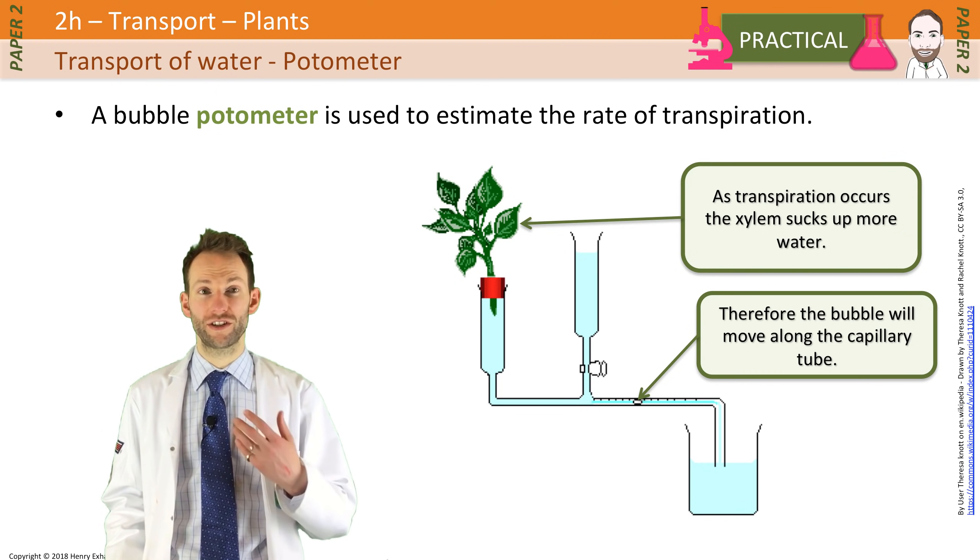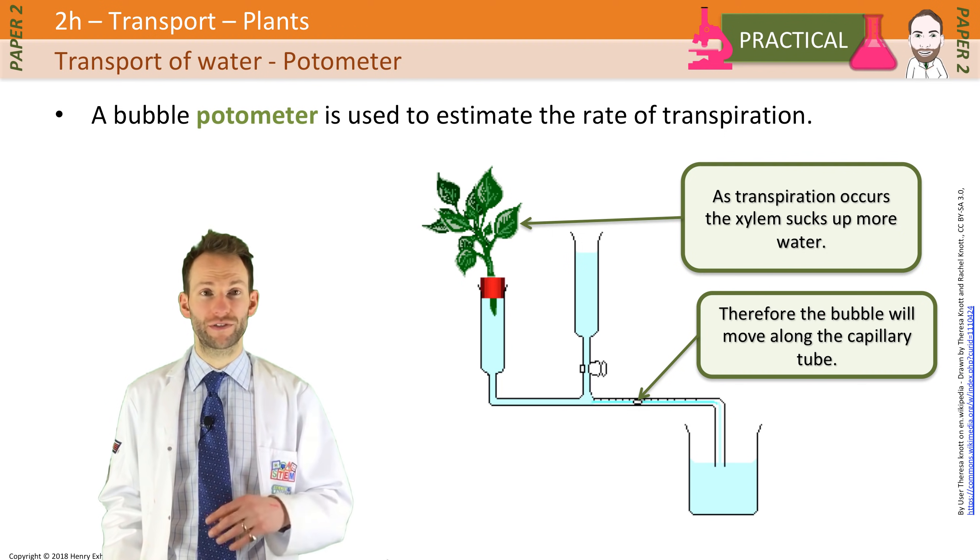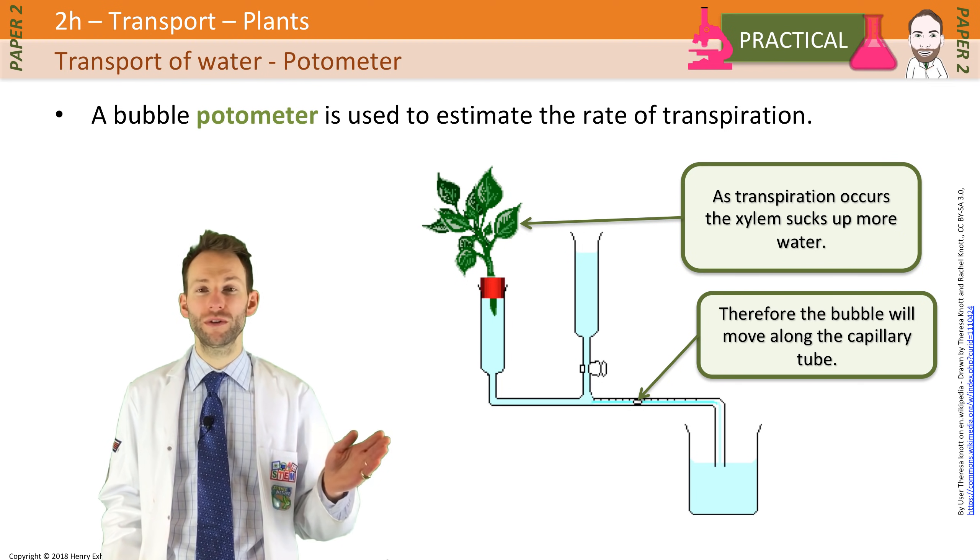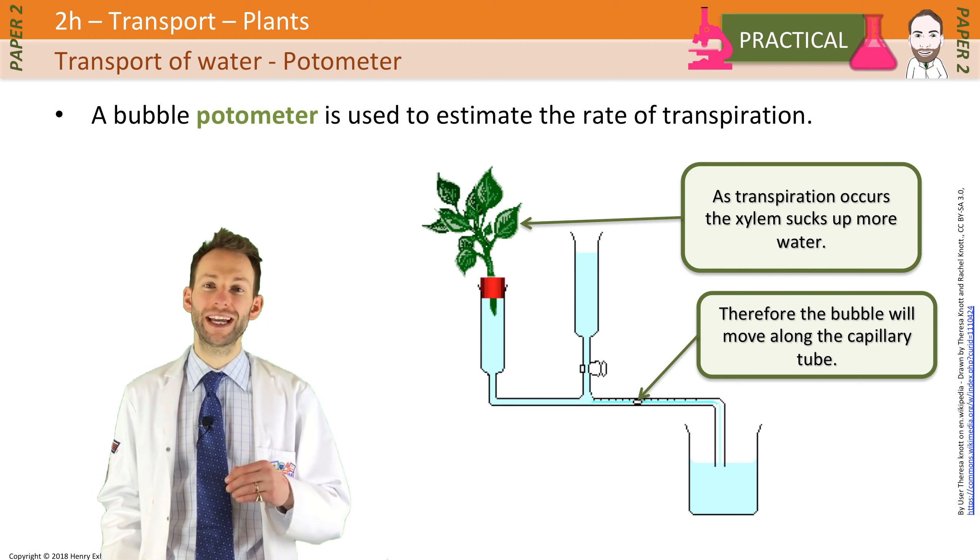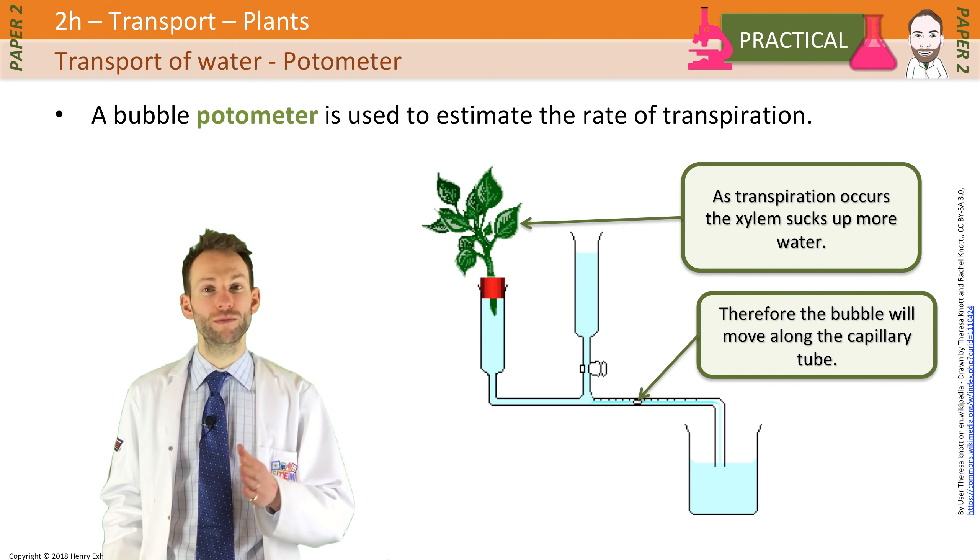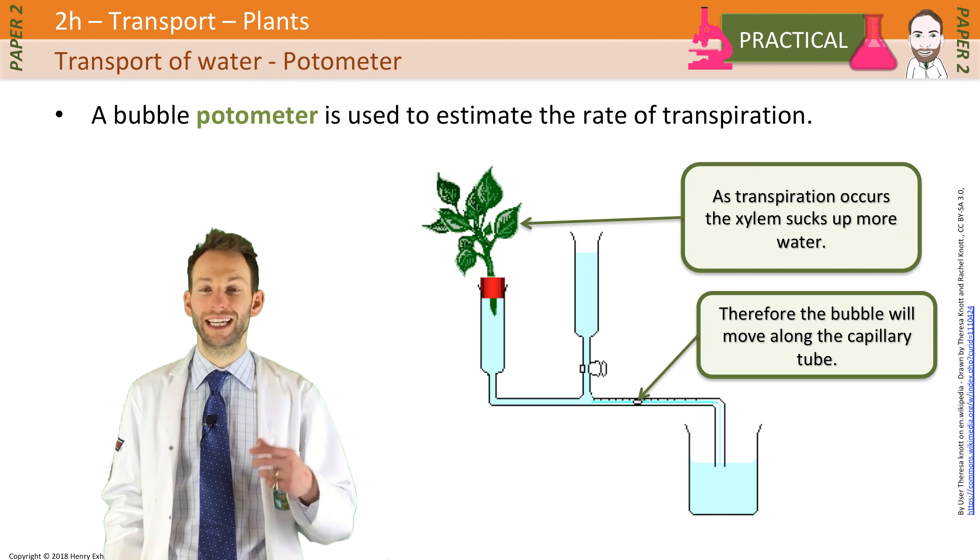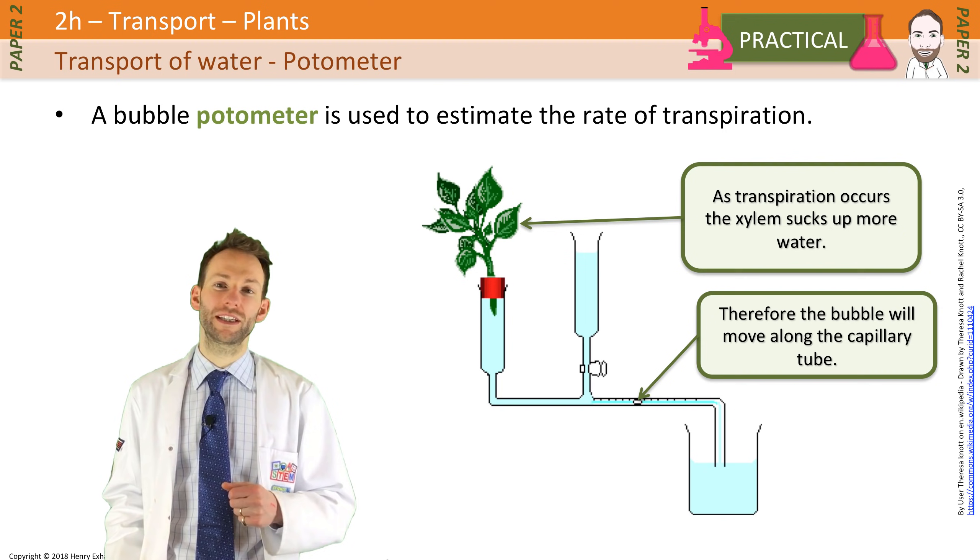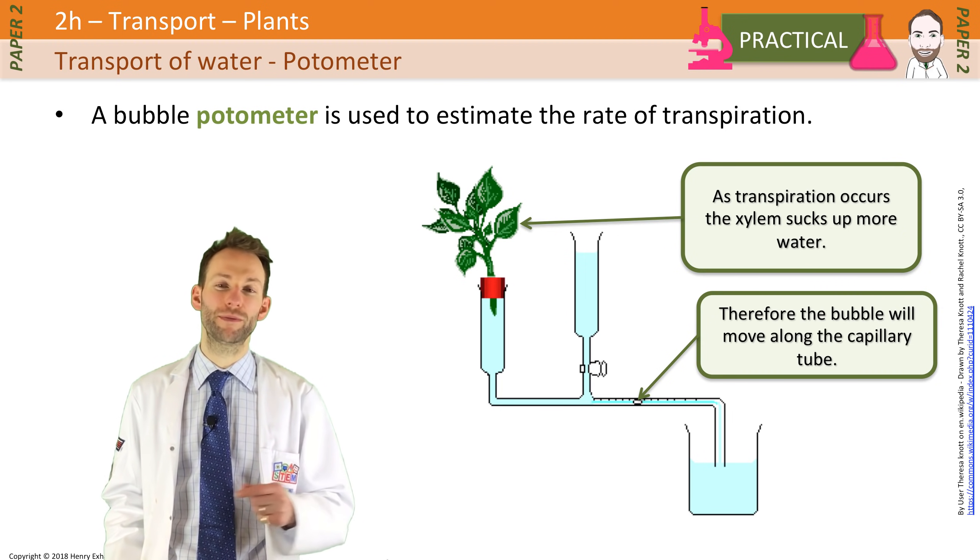What you can do with this apparatus is you can use it to investigate some of those variables we've just been talking about, things like light intensity and wind speed. You can use a lamp, for example, to change the light intensity by moving the lamp closer or further away, and see the effect on the rate of transpiration, which is going to be how far the bubble moves along that little tube in a given amount of time. Move the lamp closer, see if the rate at which the bubble travels increases.